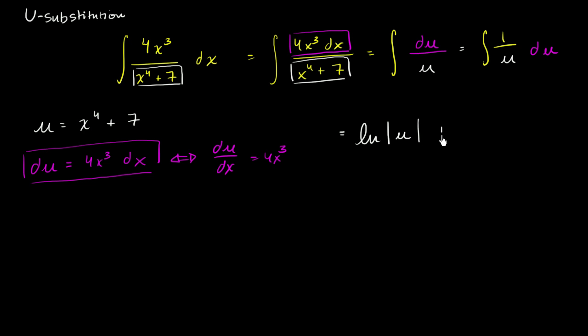The natural log of the absolute value of u. And then we might have had a constant there that was lost when we took the derivative. So that's essentially our answer in terms of u.